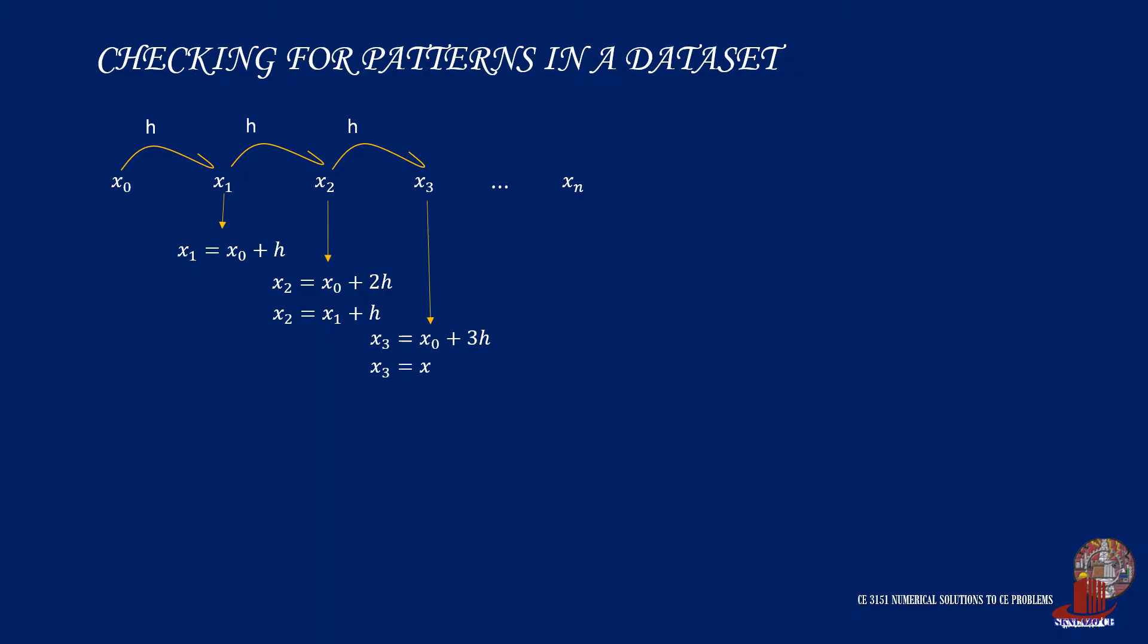So if we reach the last value of X, which is Xn, we can have Xn is equal to X0 plus N times H, and Xn is also equal to the value before it, or that is X of N less 1 plus H. As we said that Y is a function of X, we can also check the pattern of the output Y. In this case, we come up with Y0 is equal to F of X0, Y1 is also equal to F of X1, Y2 as F of X2, Y3 as F of X3, and so on.